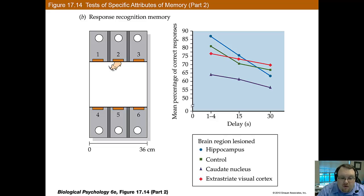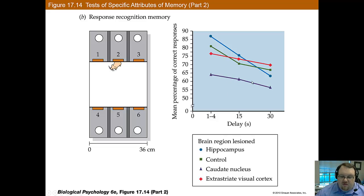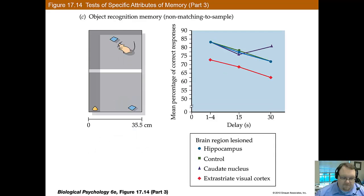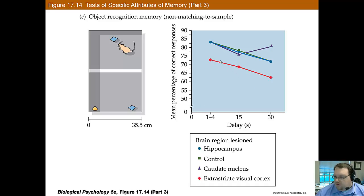In a memory test of motor behavior, the animal must remember whether it made a right or left turn previously — if it turns the same way as before, it receives a reward. Here, only animals with caudate nucleus lesions showed deficits; the others did not. For sensory perception, the object recognition test requires the rat to identify which of a pair of stimuli is novel, and this depends on the extrastriate visual cortex, whereas the other groups performed similarly.